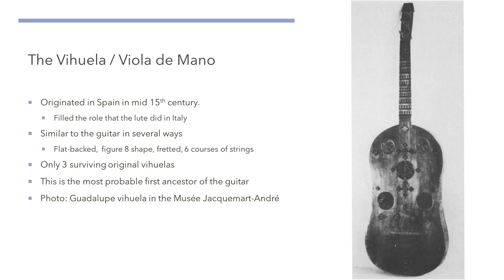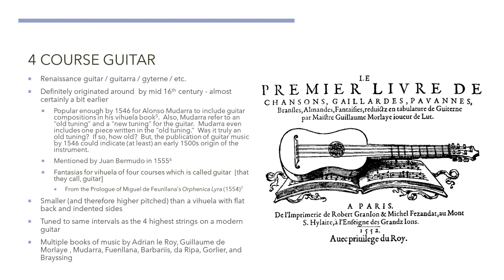The instrument is very similar to the guitar in many ways. It has a flat back, a figure-eight narrow waist shape, it's fretted, it has six courses of strings, and the peg head is only at a slight angle rather than the near 90 degree angle that we see in the lute. There are only three surviving violas from this time period. The photo on this page shows the Guadalupe viola.